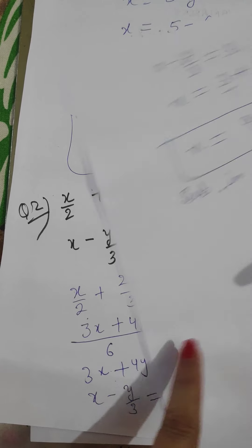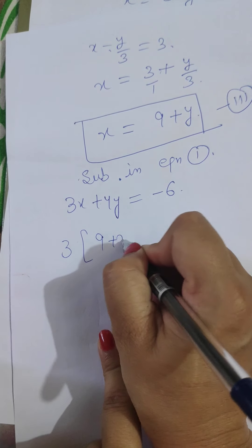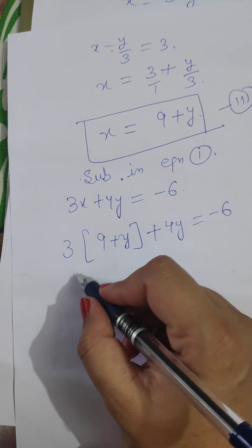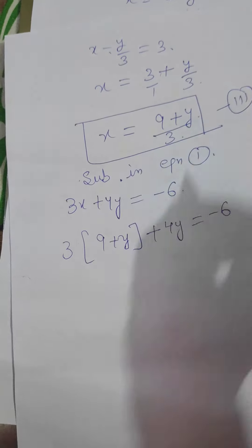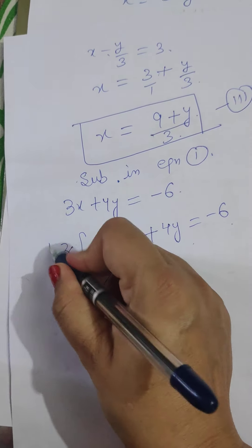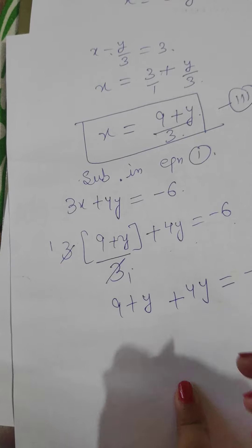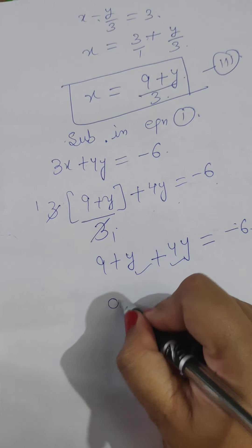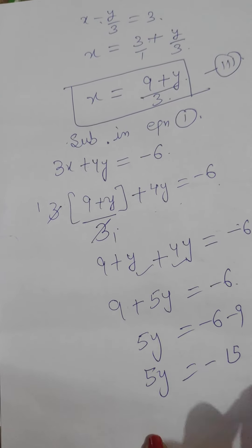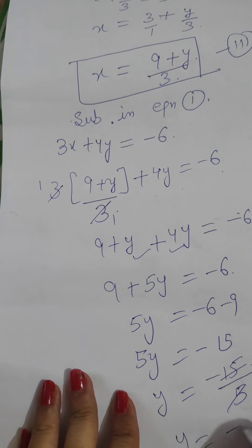We substitute this value into the first equation: 3x plus 4y equals minus 6. Substituting x equals 9 plus y upon 3 gives 3 times (9 plus y upon 3) plus 4y equals minus 6. Simplifying: 9 plus y plus 4y equals minus 6, so 9 plus 5y equals minus 6, and 5y equals minus 6 minus 9, which gives 5y equals minus 15, so y equals minus 3.